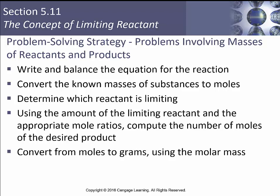The steps in this are basically the same. You're still going to write out a balanced chemical equation in step zero. You're going to convert your masses of your substances into moles. You're going to figure out which reactant is limiting. You're going to use the amount of the limiting reactant to figure out the number of moles of the desired product. You're going to convert that moles of product to grams using the molar mass. Then you just tack on one extra step where you do actual over theoretical times 100 to compute your percent yield.